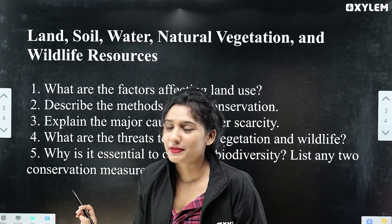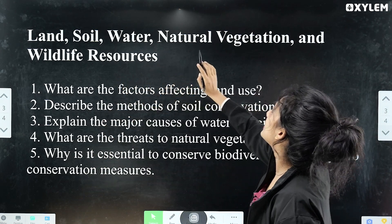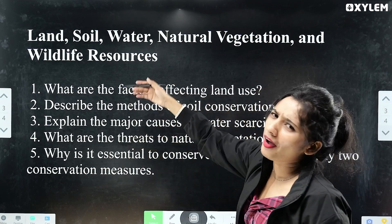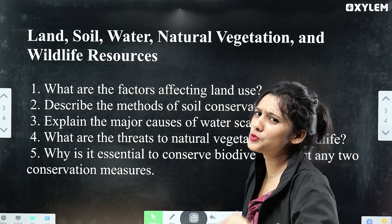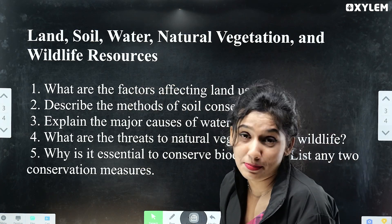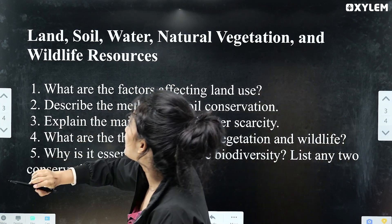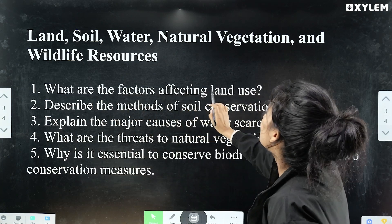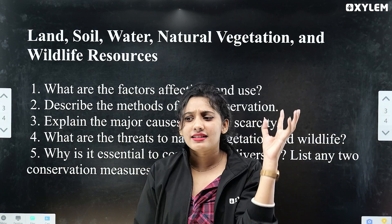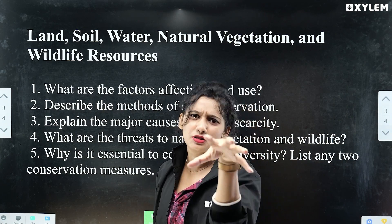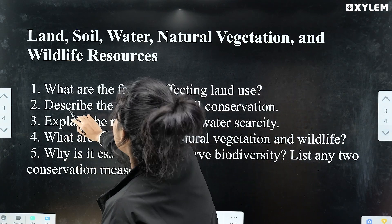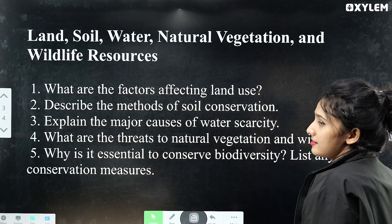Our second chapter is: Land, Soil, Water, Natural Vegetation, and Wildlife Resources. We have a lot of questions in this chapter. The first question is: what are the factors affecting land use? Land usage and the factors affecting it — it's a direct question.